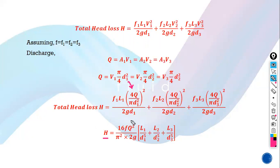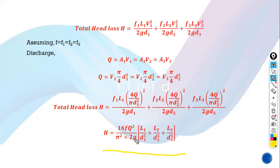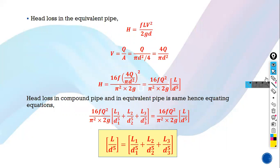Taking common terms out — q², friction factor f (assumed same: f1 = f2 = f3), π², and 2g — the total head loss simplifies to: h = (16fq²) / (π² × 2g) × [l1/d1⁵ + l2/d2⁵ + l3/d3⁵]. Note that d1² appears twice giving d1⁴, and one more d1 gives d1 raised to 5 in the denominator.